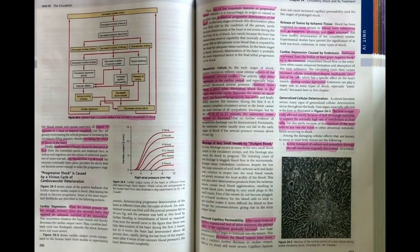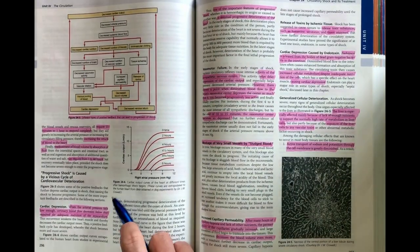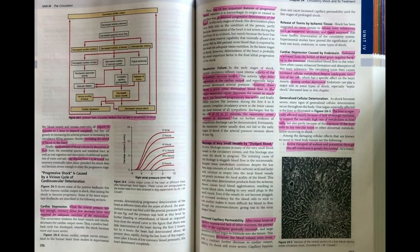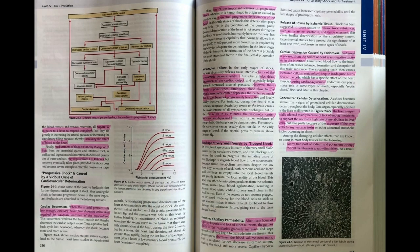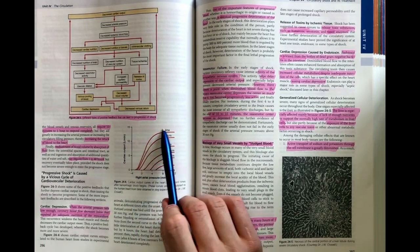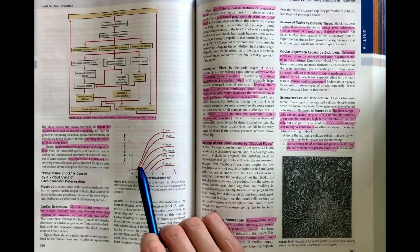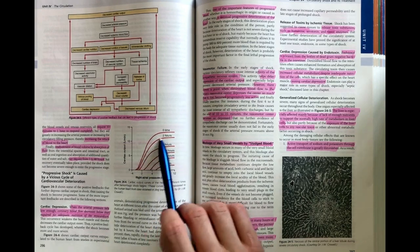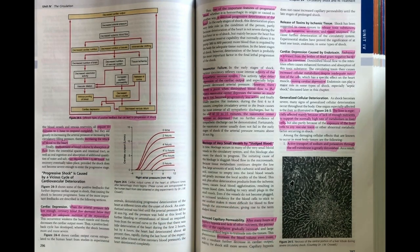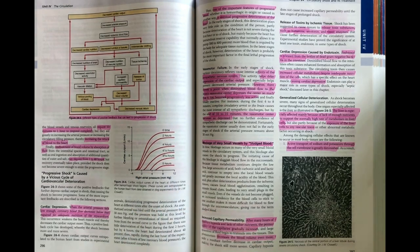This figure here, figure 24-4, shows us our cardiac output curve that we've gotten into great detail with in the past chapters. It shows that over time, this cardiac output curve slowly diminishes down. We get a reduction in our cardiac output capacity and also an increase in right atrial pressure.